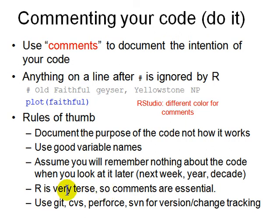You can also track changes by putting your code in Git, CVS, Perforce, or SVN for version control and change tracking. Every time you make a change, you commit it back into your version control system. So if something goes wrong, you can always go back and see the results on that particular day.